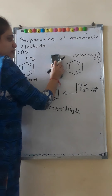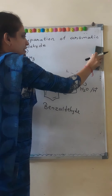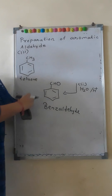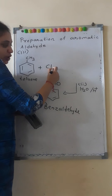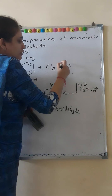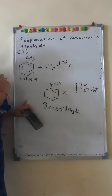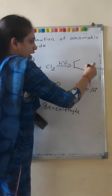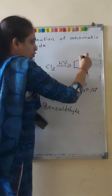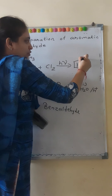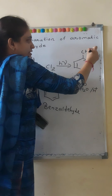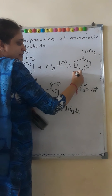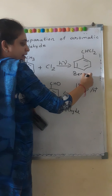In the third method also, our starting compound is toluene. Toluene is reacted with chlorine in the presence of sunlight. Two hydrogen atoms are replaced by two chlorine atoms, so we get a CHCl₂ product — this compound is called benzal dichloride.